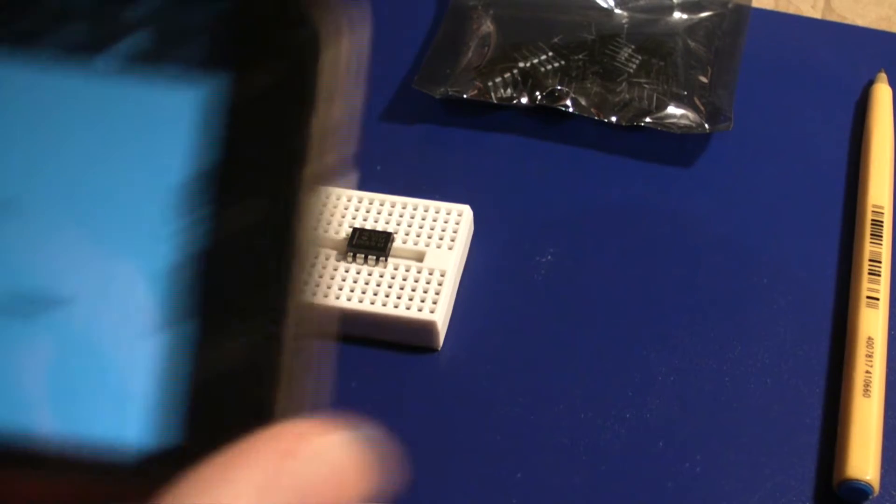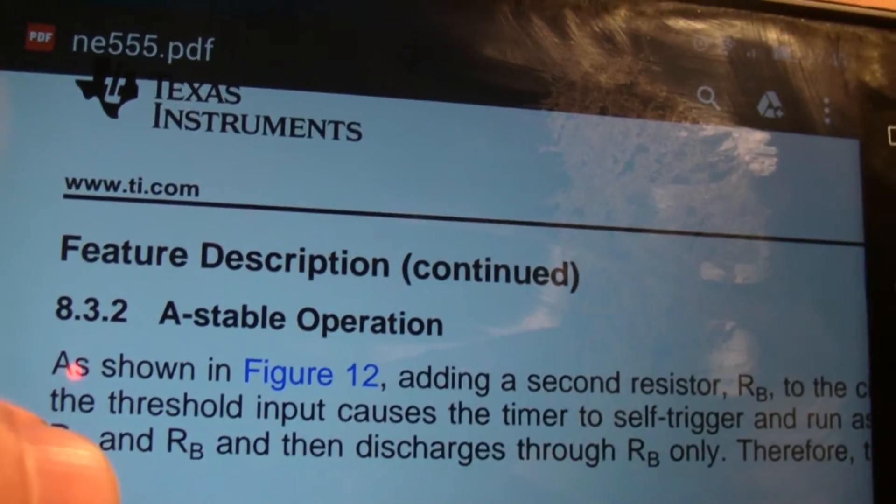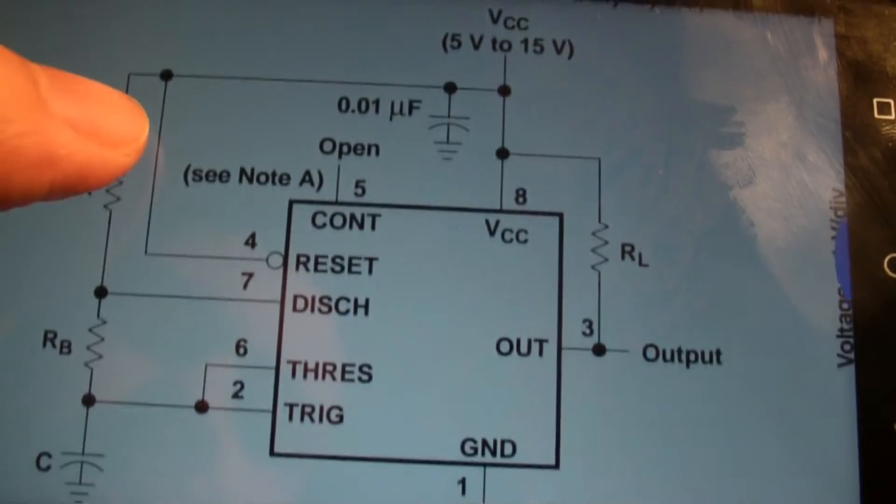We're going to be following the circuit diagram from the relevant datasheet, and it's described as astable operation. So we're going to be doing an astable operation circuit.